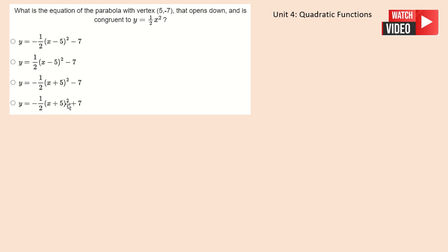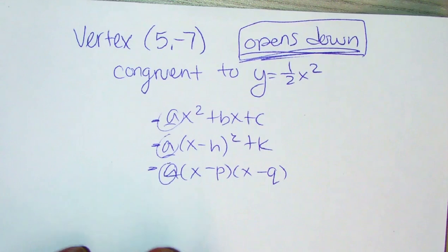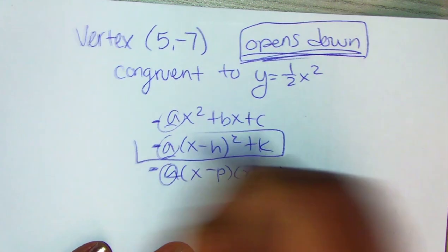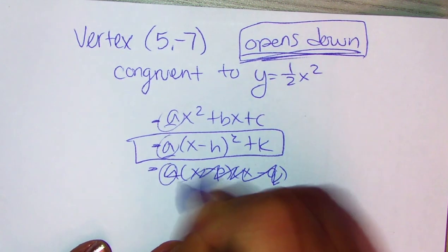So the real question here is about that five and that seven, how to put that five and seven into your equation. Five and seven come from using vertex form. So we're going to ignore the other two.